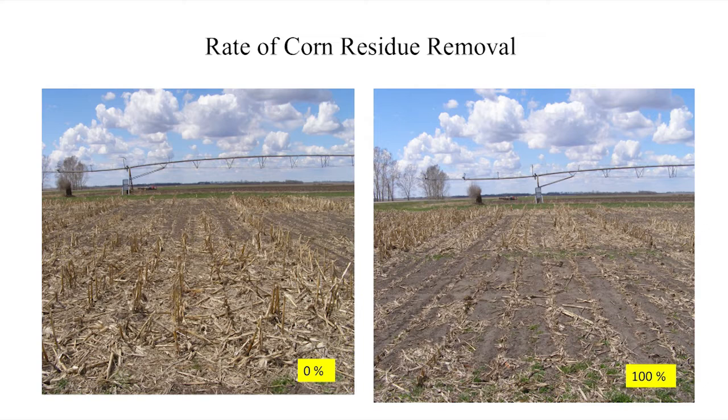All of the residue is left on the zero percent, and all the residue is removed except the stumps and root systems, which are left in the soil from season to season. There are two different management systems: a continuous corn system and a corn-soybean rotation system. Within the corn-soybean rotation, there's corn one year and soybean the next, or soybean the first year and corn the next, so both parts of that rotation are present.